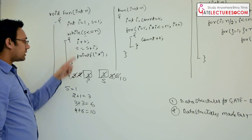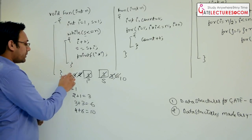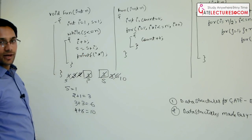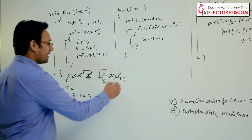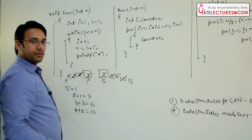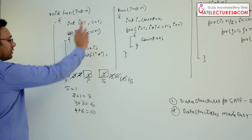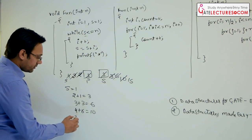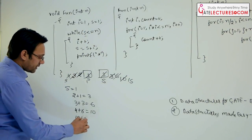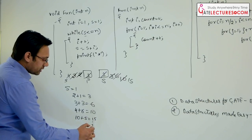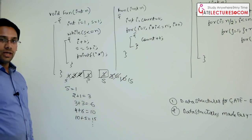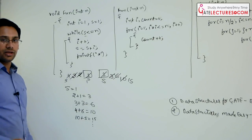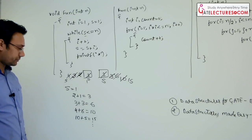Again we execute this. The value of i will become 5, so s = s + i gives us 10 + 5 = 15. So the value of s becomes 15. This is how the value of s is growing. Can you identify if there is any pattern in how the value of s is growing?